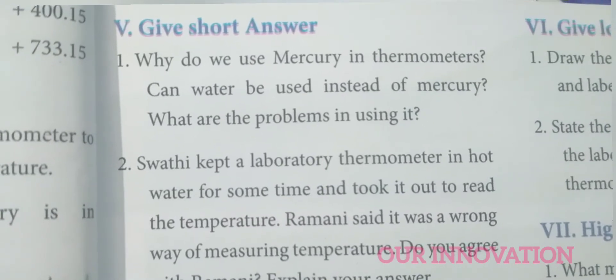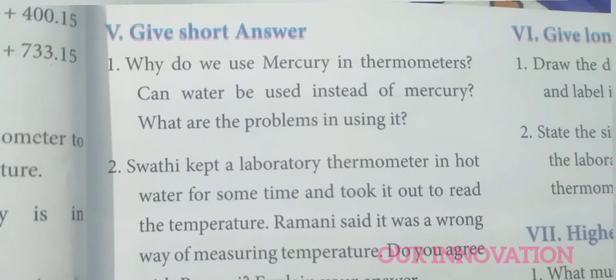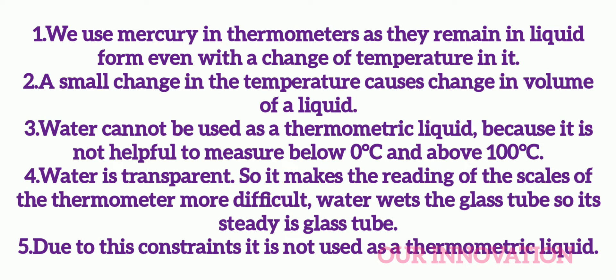Why do we use mercury in thermometers? Can water be used instead? We use mercury in thermometers as it remains in liquid form even with a change in temperature, and a small change in temperature causes a change in volume. Water cannot be used as a thermometric liquid because it cannot measure below 0 degree Celsius or above 100 degree Celsius, it is transparent making reading difficult, and it wets the glass tube.